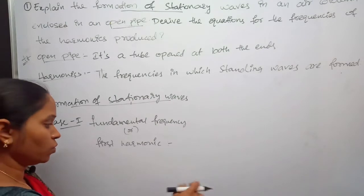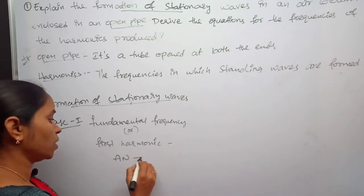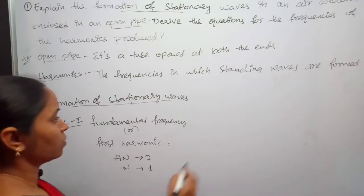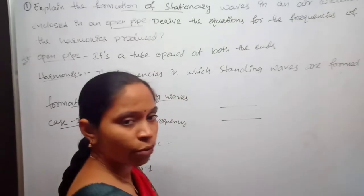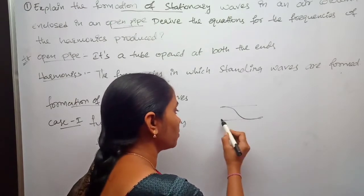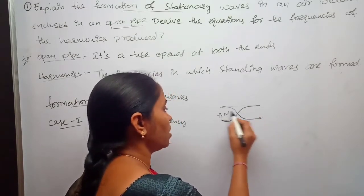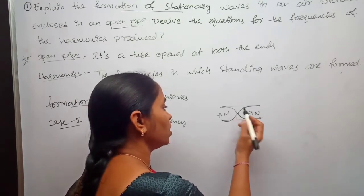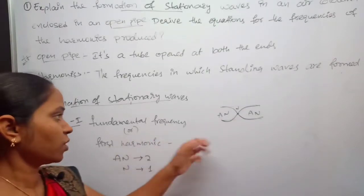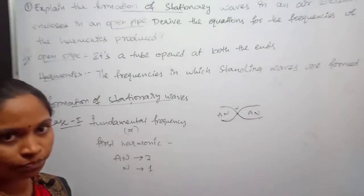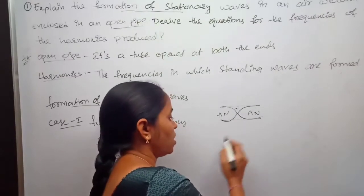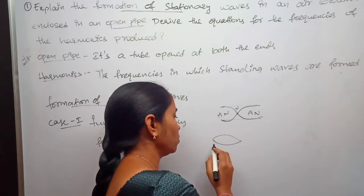The first harmonic, or fundamental frequency, is formed with two antinodes and one node. Whenever a sound wave travels through the open pipe, antinodes are always formed at the ends of the pipe. So for the first harmonic, we have two antinodes at the two ends and one node in the middle.